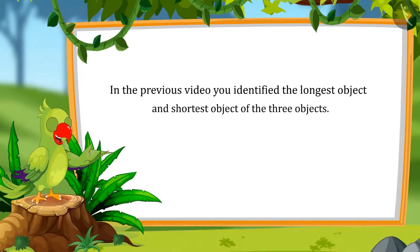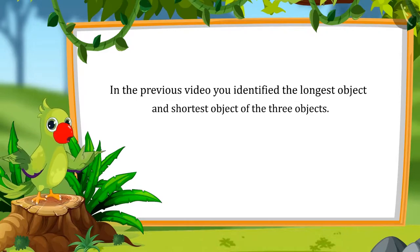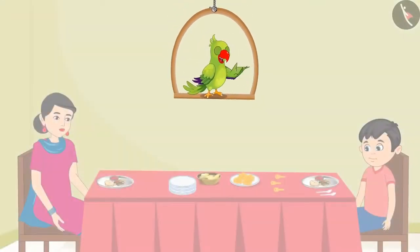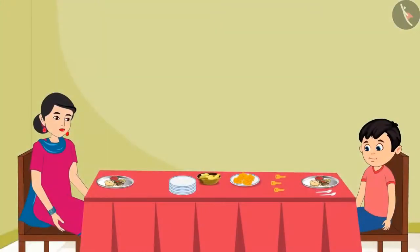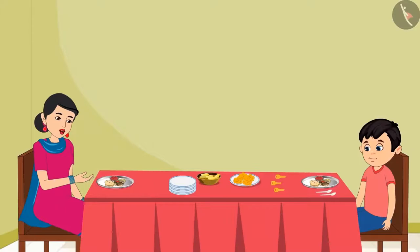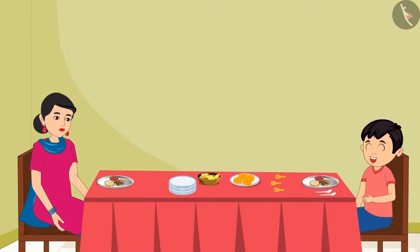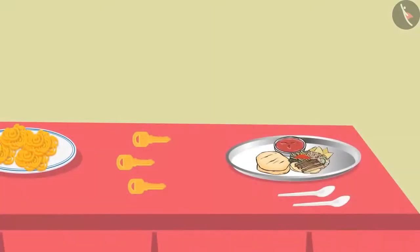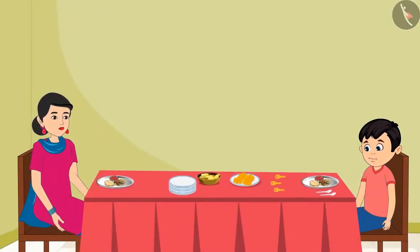So friends, in this video, we will learn about some common mistakes in identifying long and short objects. Chotu and his mother have sat down to have their food. Chotu, can you please give me a spoon? Which spoon, mummy? The short one or the long one? Chotu, both these spoons are of the same length. Neither of them is short or long.